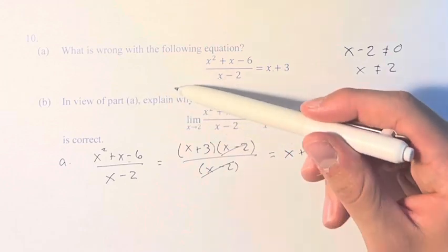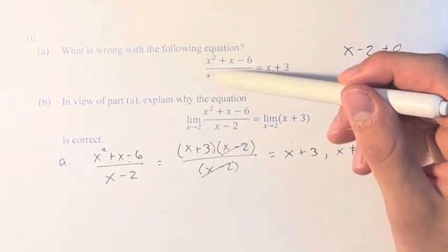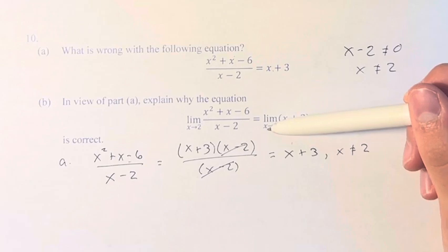However, in view of part a, explain why the limit as x approaches 2 of this side is equal to the limit as x approaches 2 of this side.